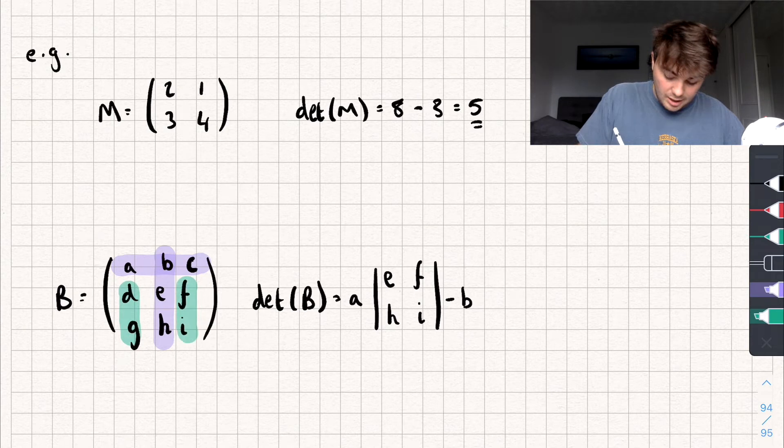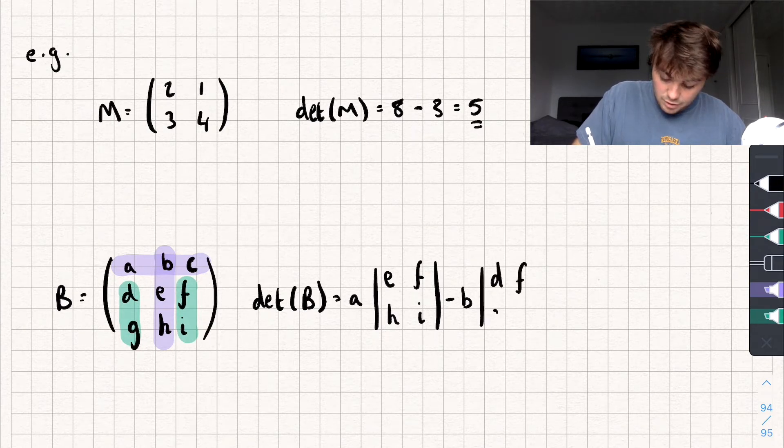So you can see it leaves d, g, and f, i, so we're going to find the determinant of that, so d, f, g, i.